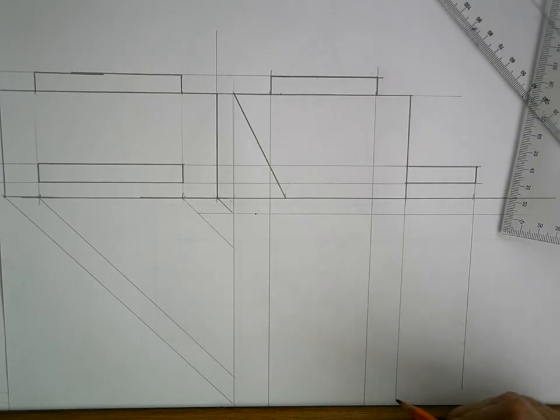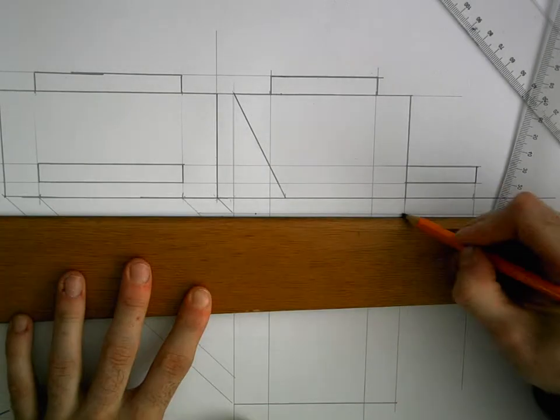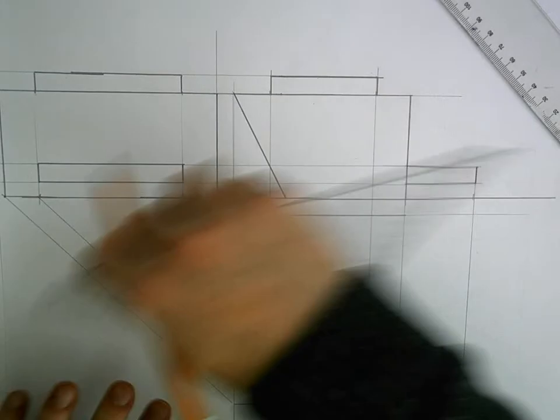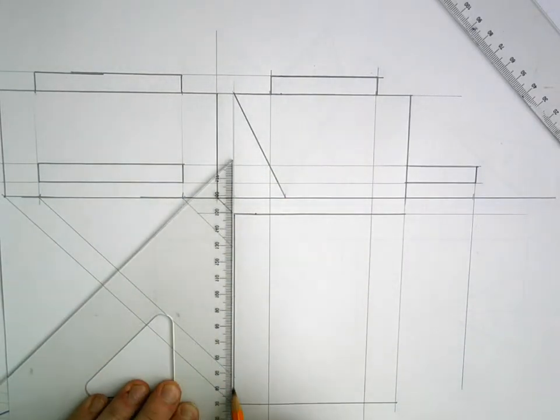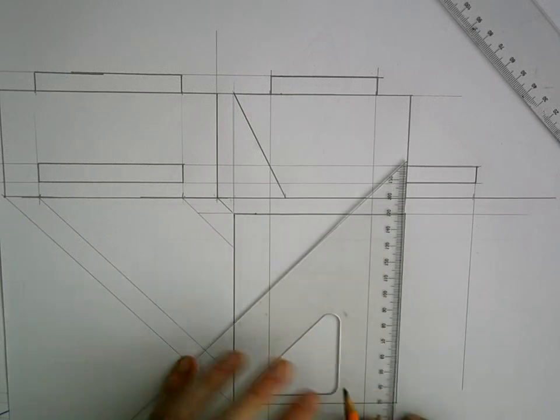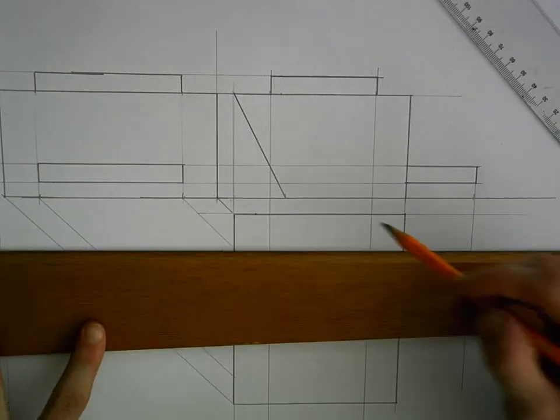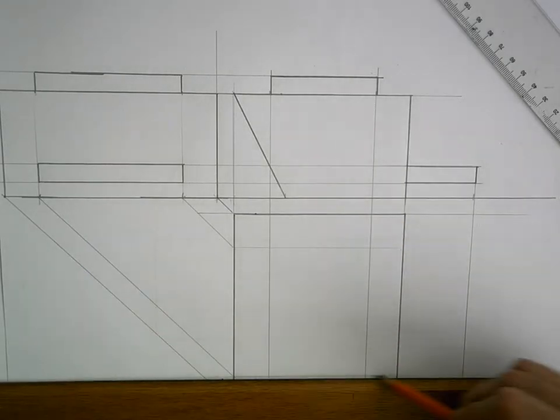So we can begin to box this off. You have to match up what line belongs to what line. So a little bit of visualization involved. So that's the main body of it. The top part. This little rectangular square at the top.